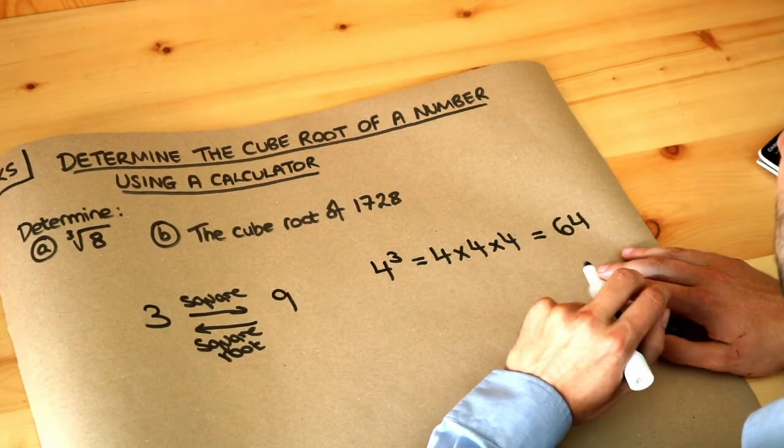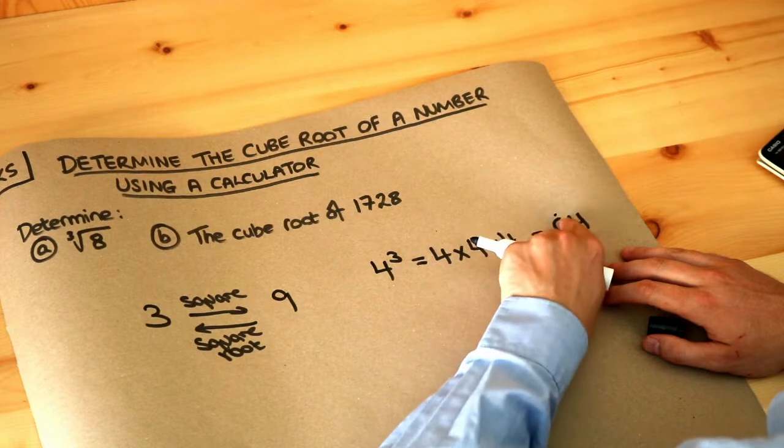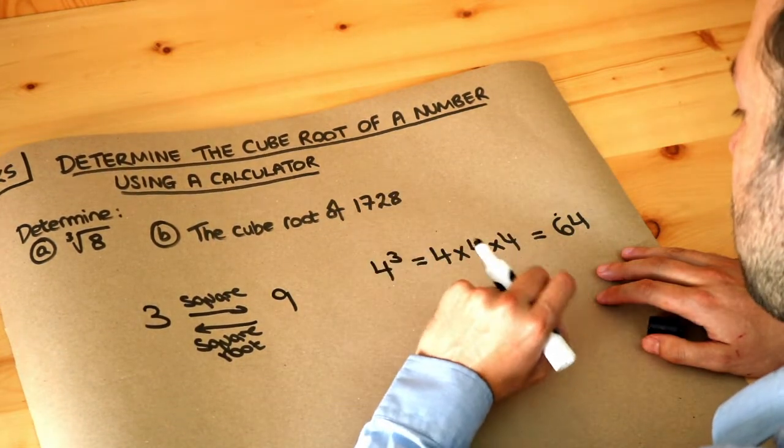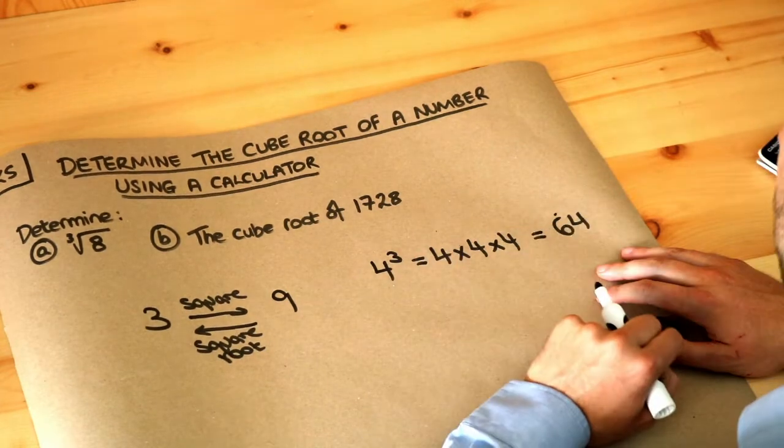Now the opposite of that, if we were to cube root 64, that would give you 4. So cube rooting asks the question: what cubed gave you that number?